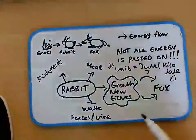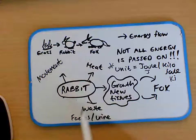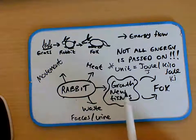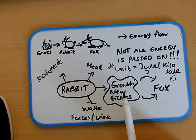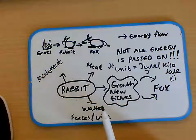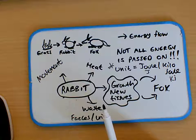For that thousand joules we talked about before, if we take away these pointers, these facts here, we might only be left with 200 joules. So the original thousand joules, only 200 joules is being passed on to the actual fox.